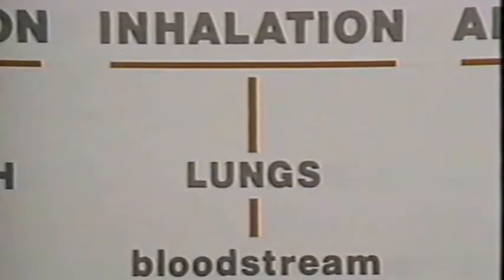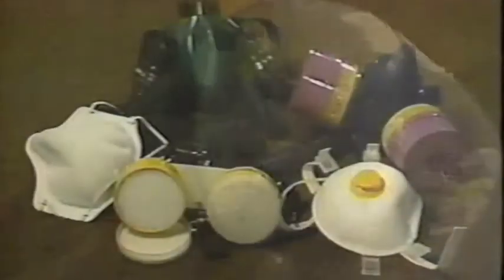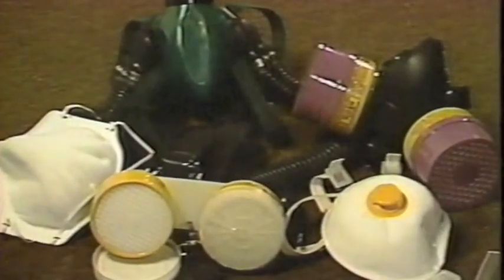Inhalation is by far the most common and usually the fastest route into the body. You have to breathe. Large dust particles are trapped by the hairs and lining of the nose. But smaller dust, along with fumes, mists, vapors, and gases, can pass into the lungs. That's why respirators fitted for each of these particle sizes and specific chemicals are so important.